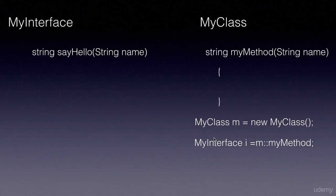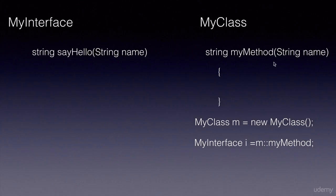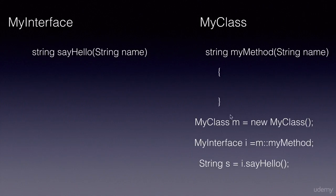Inside our main method, we can map this implemented method to the functional interface's method using the double colon operator. Since this is an instance method, we first need to create an object, and then using that object and the double colon operator, we are mapping this implementation to the functional interface. We can then invoke i.sayHello and automatically the implementation inside this method will be used. This is method reference.